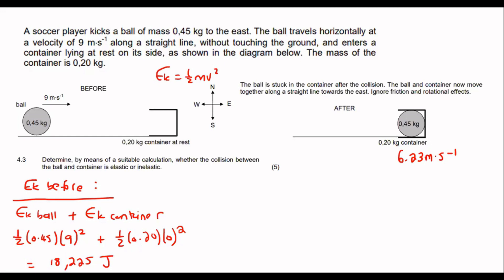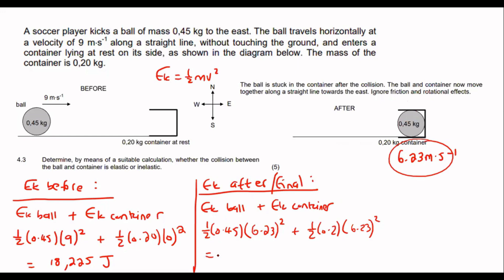Then what we can do is work out the Ek final by taking the Ek of the ball plus the Ek of the container. If you want to combine them into one mass, you definitely can. I'm just going to keep it separate. So, I'm going to say a half times 0.45. Now, the velocity is 6.23. And then the container is also 6.23. And if you go work that out, you get 12.61 joules. So, can you see that the kinetic energy before is not the same as the kinetic energy afterwards? So, therefore, this collision was inelastic. Pretty easy.